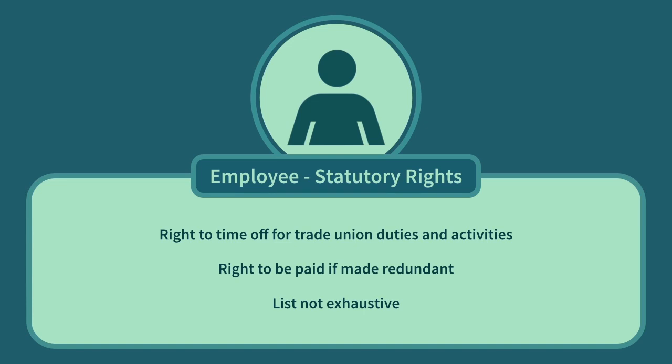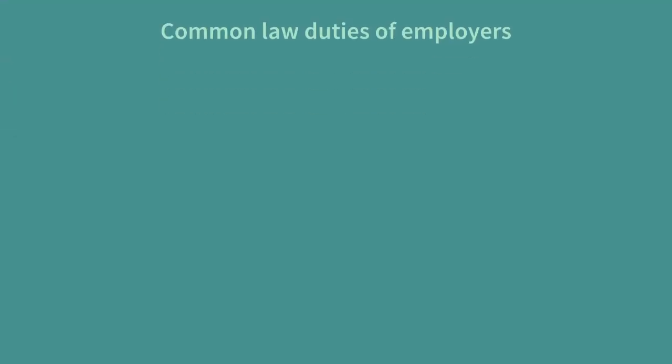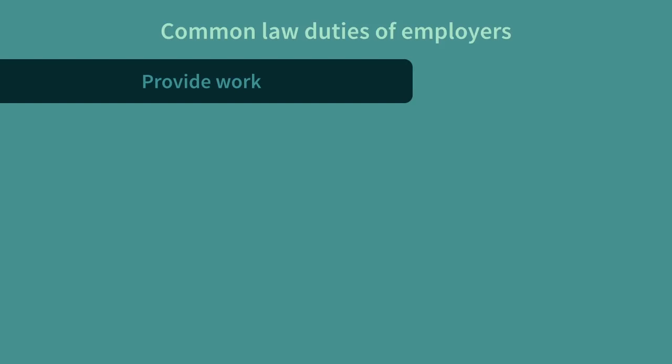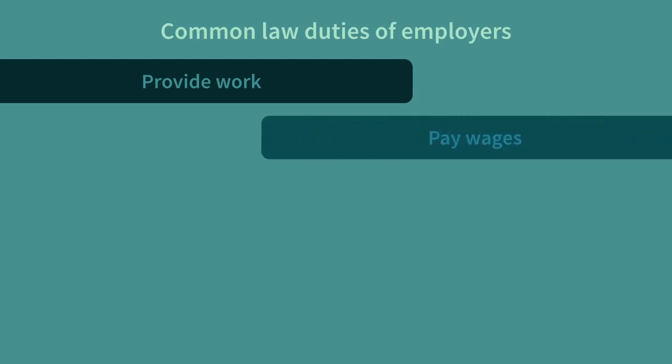Although employment law is a very statute-based subject governed particularly by the Employment Rights Act 1996, there are underlying common law rules that apply and have effect in any employment relationship. Such rules apply to both employer and employee. The employer will normally be expected to provide work for the employee based on the employee's skills and to train the employee where required for a specific task. No breach of this implied duty will occur so long as the employee continues to be paid, even though there may be no work available. The rate of pay is normally expressly stated in the contract of employment; however, in the absence of an express provision, the law will impose the duty to pay a reasonable remuneration for the work done.